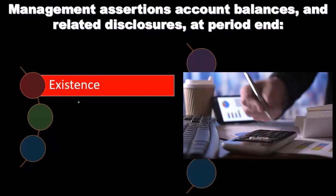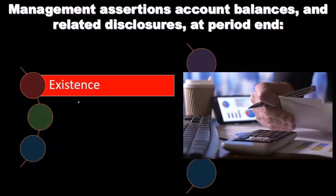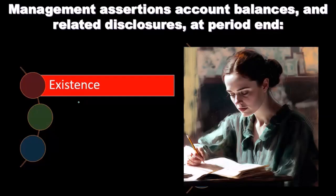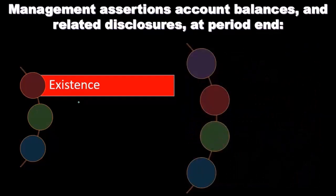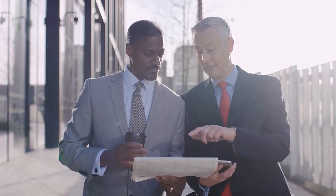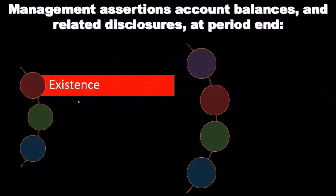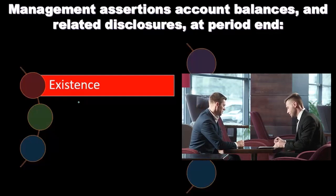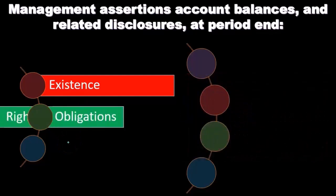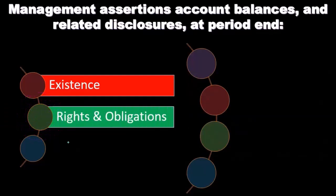But in any other context — publicly traded companies, companies looking for a loan, or companies seeking equity investments — companies will typically try to look better than they may actually be. As auditors, we're usually not representing just the IRS. The main users of the financials for an audit are typically investors and lenders such as banks. So our skeptical slant is toward financial statements being overstated and looking better, and that perspective shapes how we put together our audit procedures.